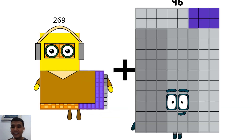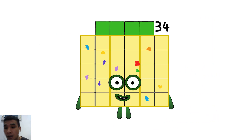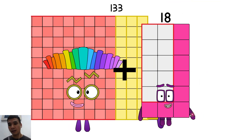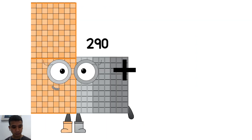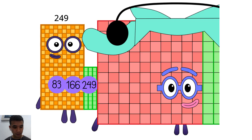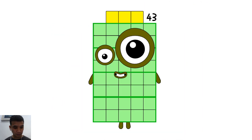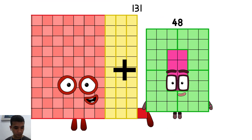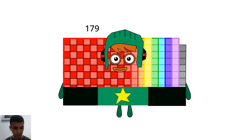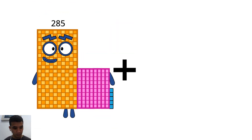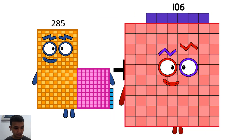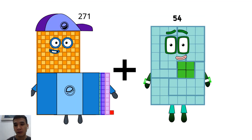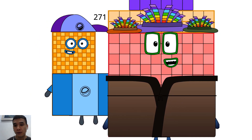269 plus 80 equals 349. 133 plus 18 equals 151. 249 plus 109 equals 358. 131 plus 48 equals 179. 285 plus 106 equals 391. 271 plus 126 equals 397.